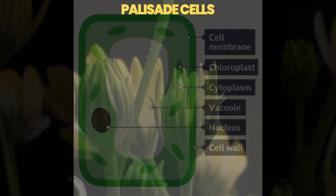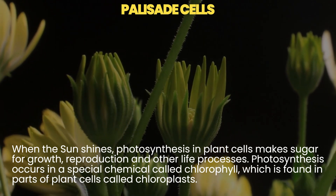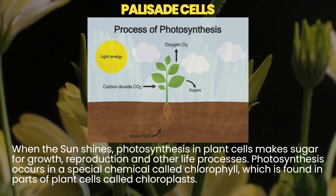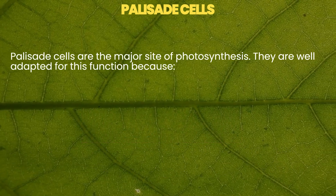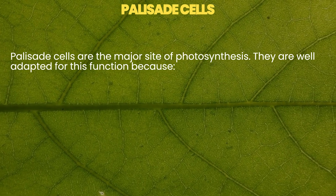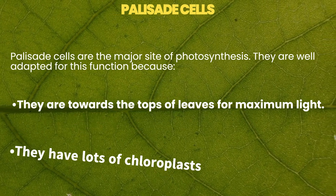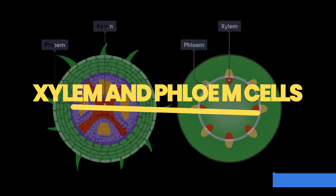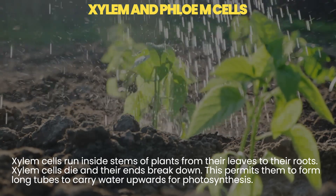Palisade cells: when the sun shines, photosynthesis in plant cells makes sugar for growth, reproduction, and other life processes. Photosynthesis occurs using a special chemical called chlorophyll, which is found in parts of plant cells called chloroplasts. Palisade cells are the major site of photosynthesis. They are well adapted for this function because they are towards the tops of leaves for maximum light, and they have lots of chloroplasts.